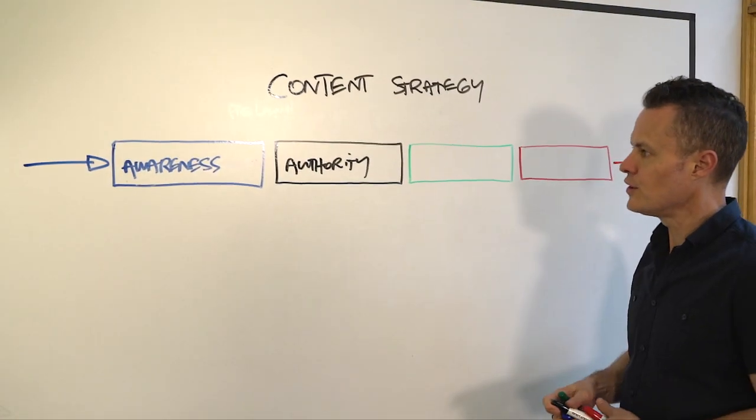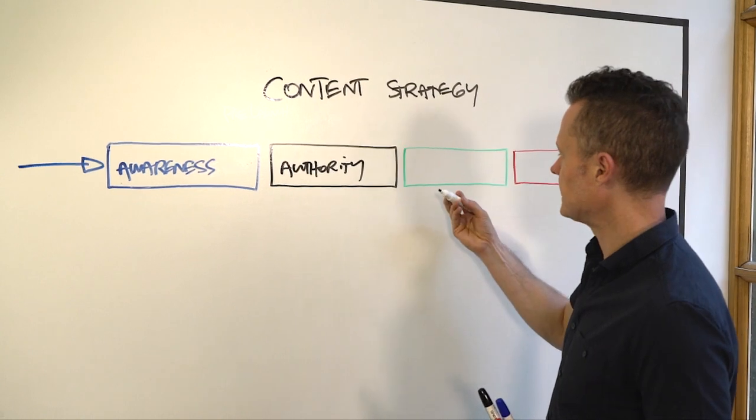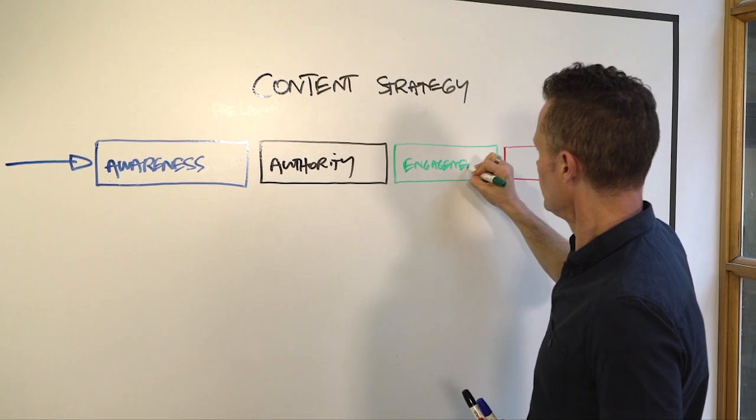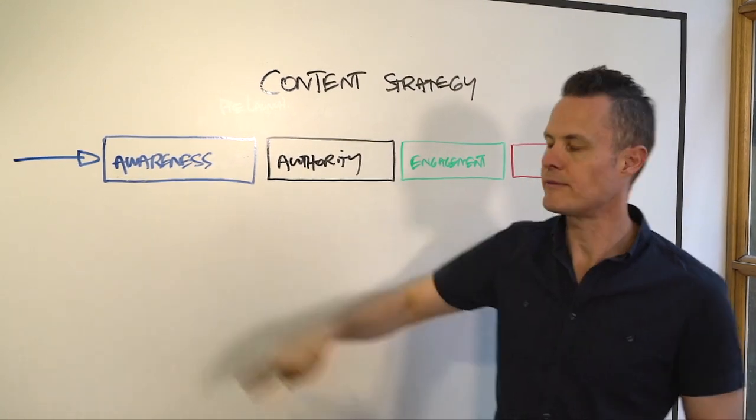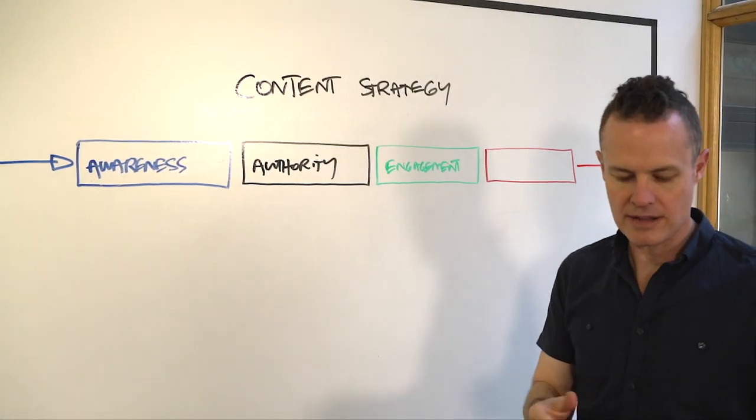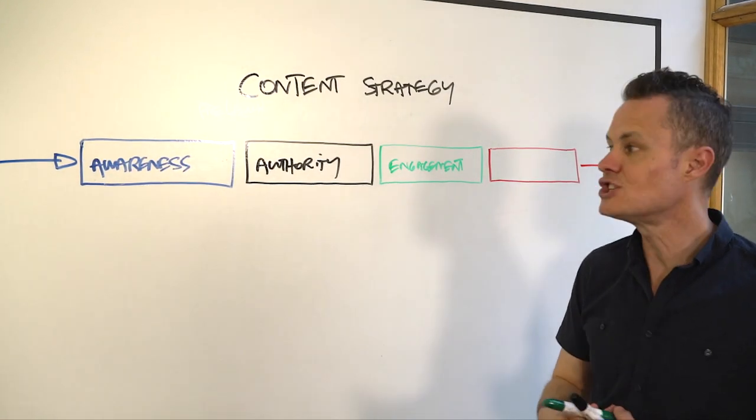The third campaign is what we call an engagement campaign. This is where we want to get the people who are now aware that they have a problem and have kind of bought into the fact that we're the authority. We want to get them engaged in some kind of activity so that they're putting their energy into this topic.